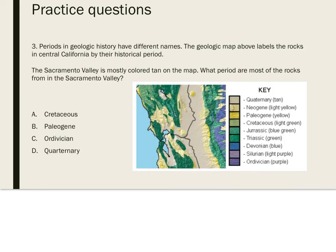Number three: this geologic map labels rocks in central California by their historical period. The Sacramento Valley is mostly colored tan on the map — what period are most of the rocks from? The key provides the information needed to interpret the colors on the map. The key shows that areas colored tan are from the Quaternary period of geologic history — answer D.